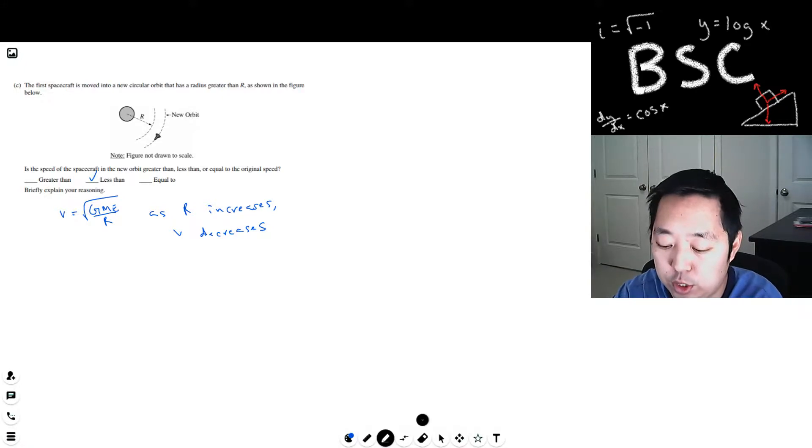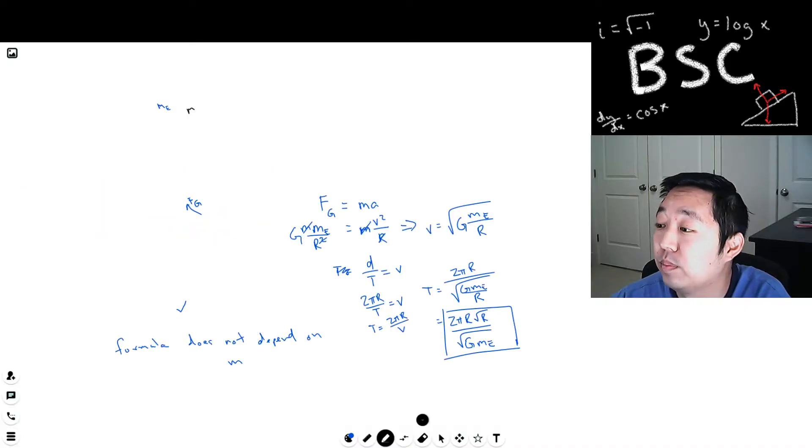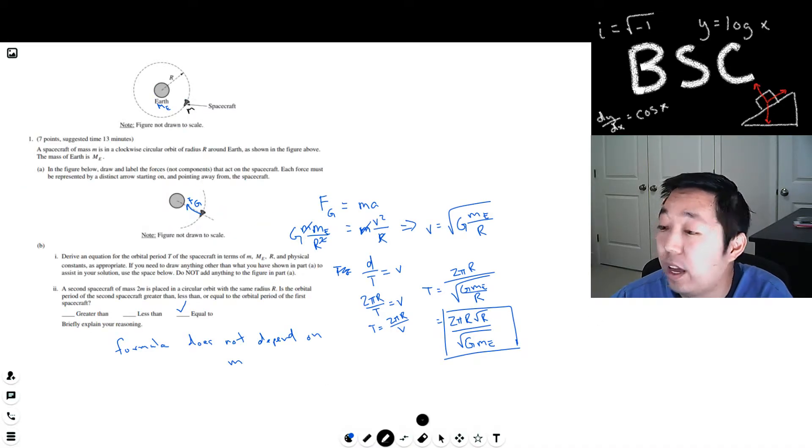And let's just double check. I need to look up the solutions, scoring guidelines. I didn't have these before, so let's take a look. One point with FG pointing towards the earth, that's correct. So I got that. In terms of T squared, 4π squared. Oh, I see. So they rearranged this a little bit. They put it all into the square root and made this 4π squared and then R cubed. But that's fine, I don't think that matters.